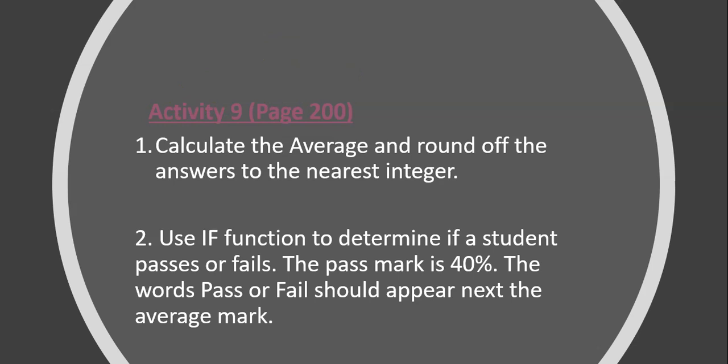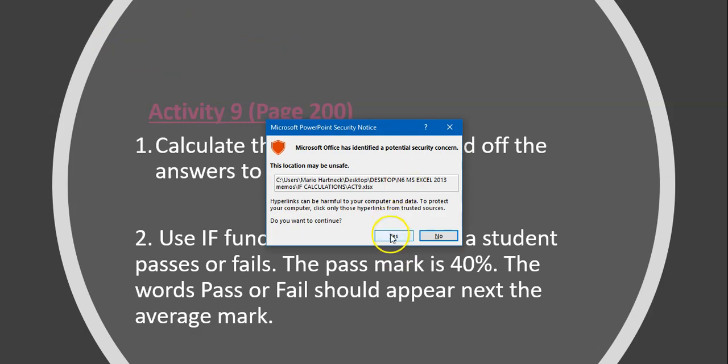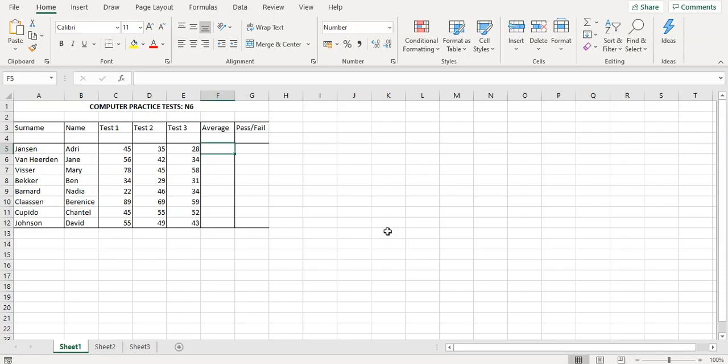The first activity I want us to do is Activity 9, which you will find in the Computer Practice N6 textbook on page 200. First of all we're going to calculate the average, then use an IF calculation to determine who passes and who fails the test.